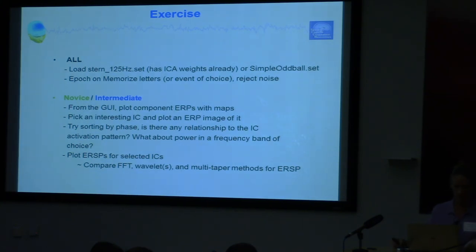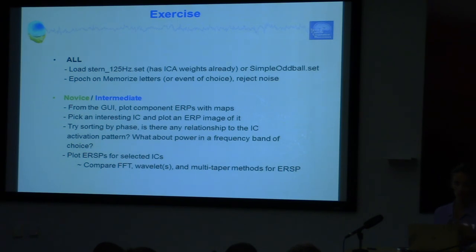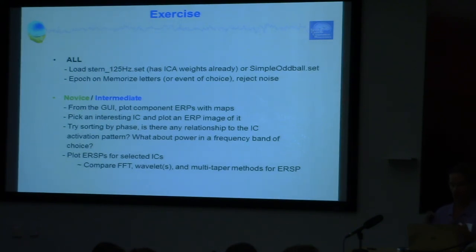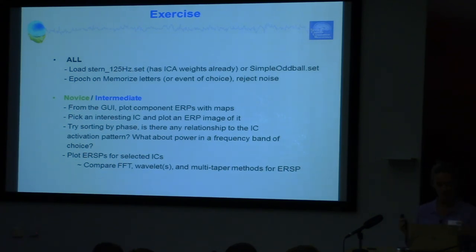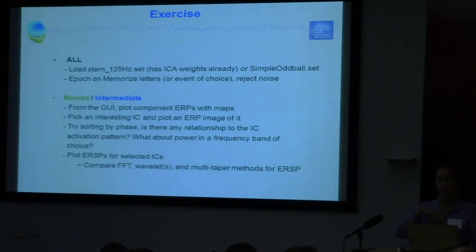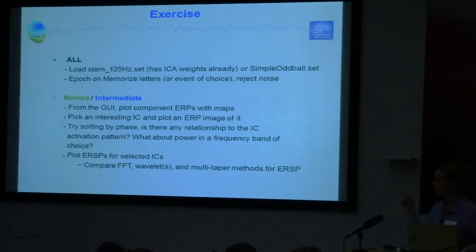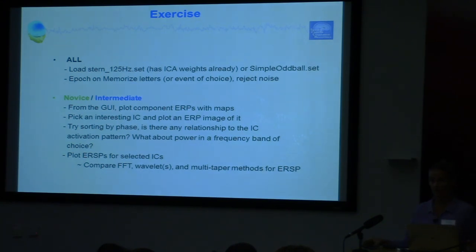So this is the exercise. You can choose whichever dataset you want — there's one called Stern 125 and then the simple oddball you looked at before. Either one is fine. This is just a time to explore the data and try these different plotting options. You can epoch on whatever you want — don't worry about it being exactly right. Just make sure you get to a place where you can use some of these plotting functions. Use some of the stuff from the first lecture to reject noisy epochs. Make sure you get to the plotting so you can see real results. We have until 4:15 — about 15 minutes — and then we'll start the third lecture.